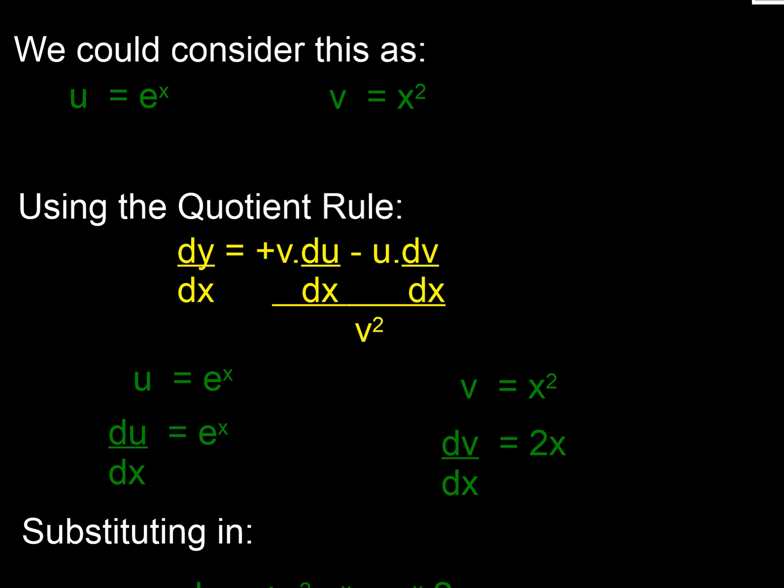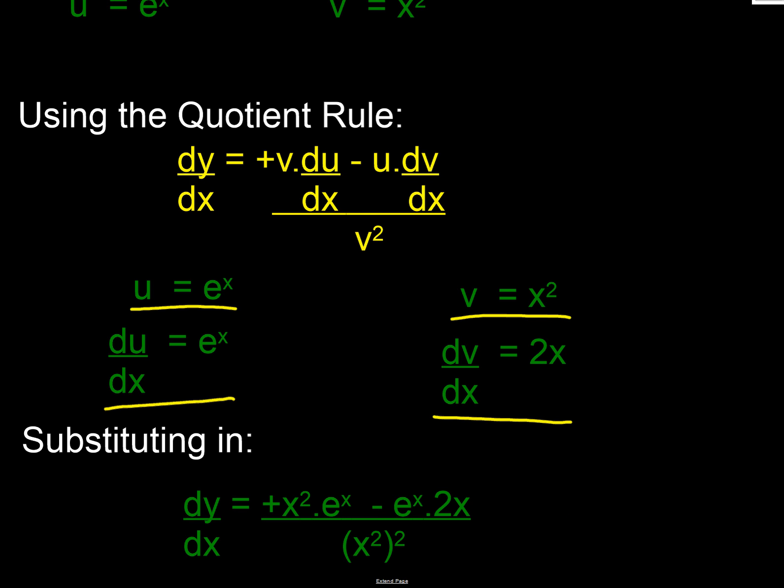Using our tabular form, we write: u is e^x, therefore du/dx equals e^x. v equals x², so dv/dx equals 2x. Then we're going to substitute these into the format of this equation above.